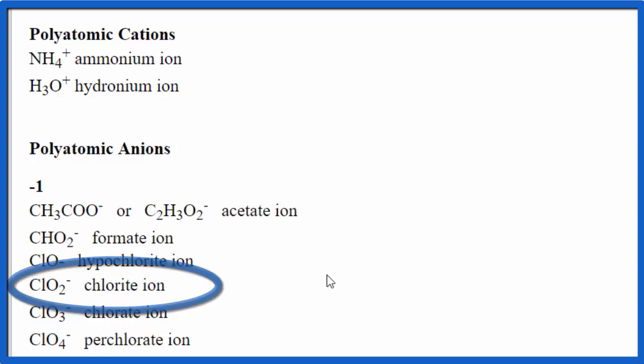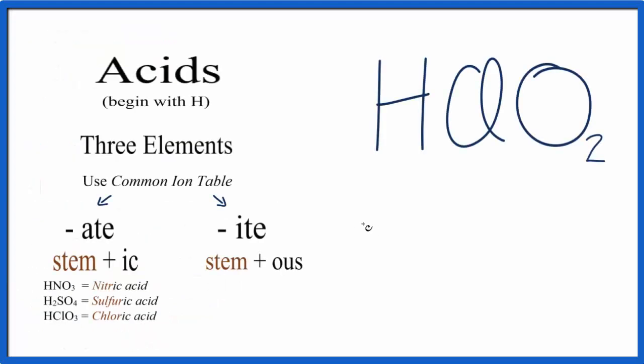So we'll head back to our flowchart, and we'll write chlorite. When we look at our flowchart, we can see if we have ite, we're going to take the stem, that's C-H-L-O-R, and replace the ite with O-U-S. So we get rid of the ite, and we write O-U-S. Then we add the word acid, and we're done.